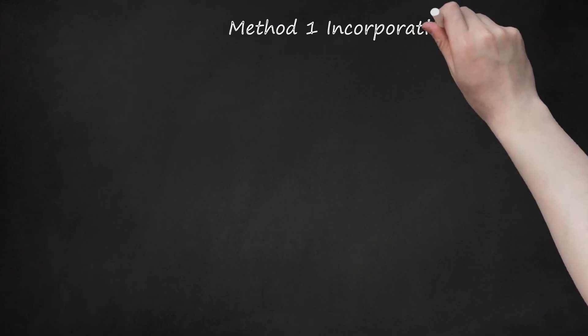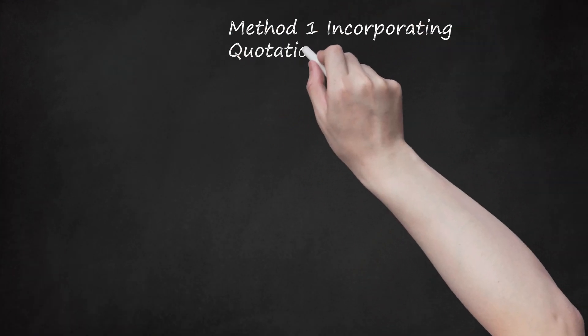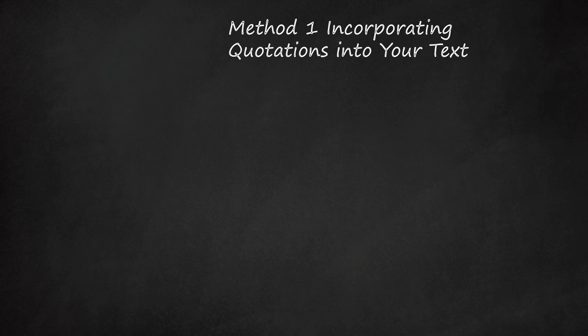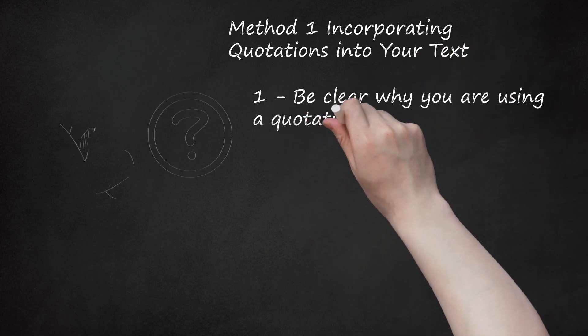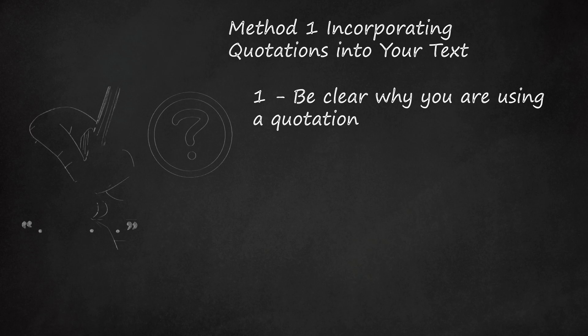Method 1: Incorporating Quotations into Your Text. Step 1: Be clear why you are using a quotation. A quotation should provide a new point of view or bolster a point you are trying to make. Elaborate on the quoted text, provide context, and explain why it supports your argument.